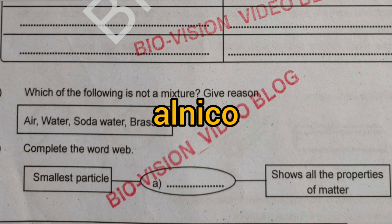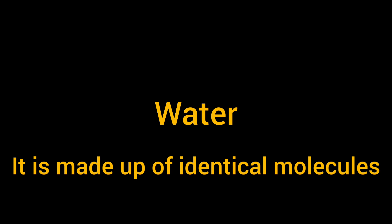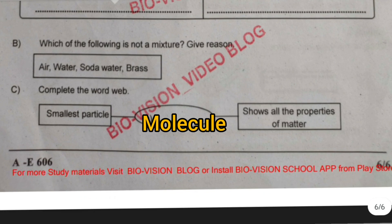The answer is water, because it is made up of identical molecules. Question C: Complete the word — the smallest particle that shows all the properties of matter. The answer is molecule.